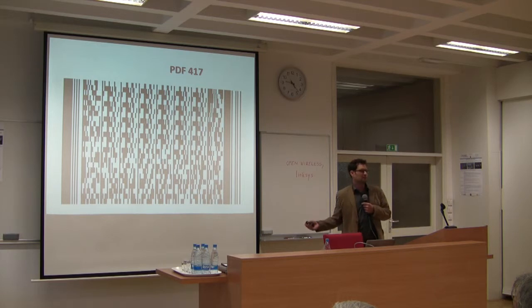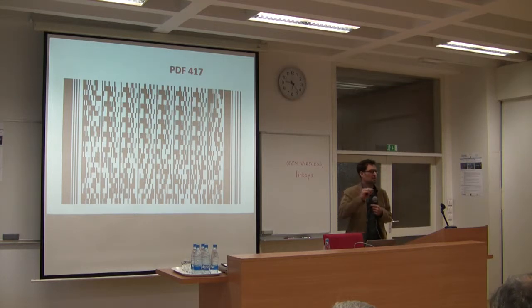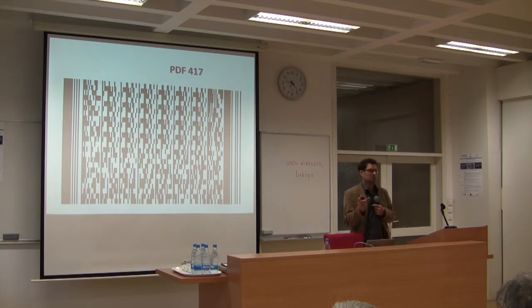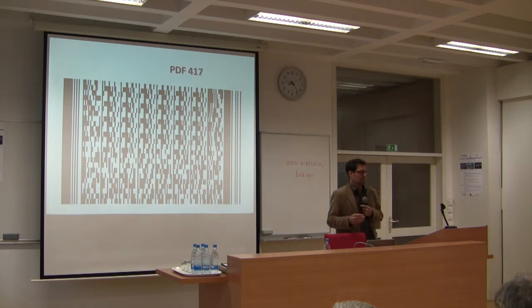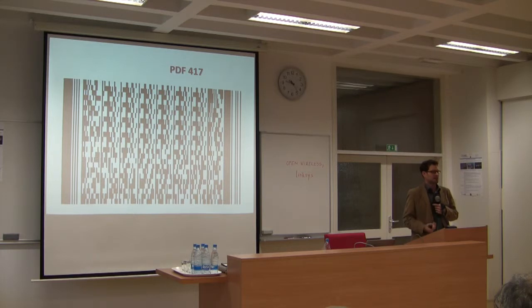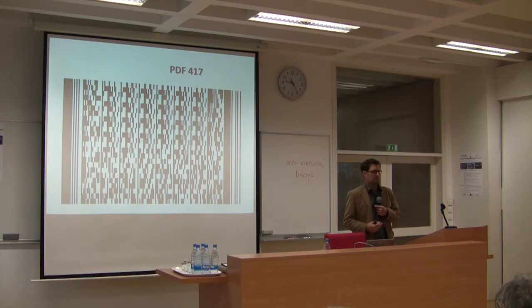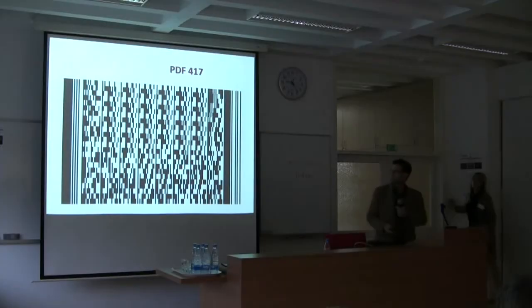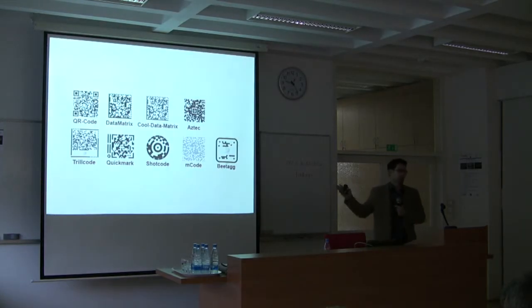PDF417 is something in between. Yes, it is a 2D code, but it's specific because it's composed of lines that are stacked. These lines can be compared to barcodes — so we have many barcodes stacked. The main benefit of this is that the code can be scanned with a simple linear scanner, the majority of scanners used in the environment. But those scanners are not good for true 2D codes.